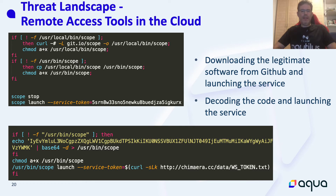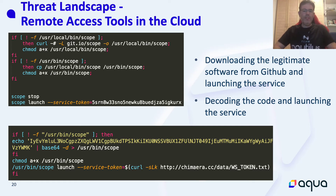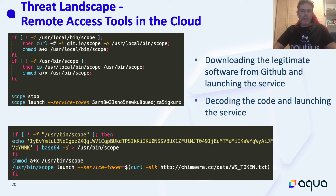With one or two lines of code, the attackers can gain control over the cluster. In some cases, the attackers may use dedicated container images or the actual legitimate WeaveScope container images stored in Docker Hub. In other cases, the attackers download the software from GitHub, or encode the binary in a malicious script, and then launch it with their own service token.